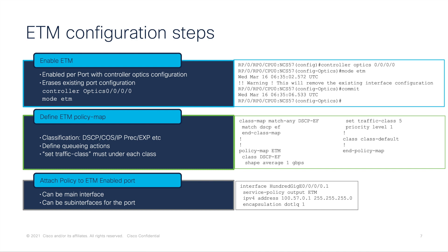The configuration steps for ETM involve three basic steps. First, I have to enable ETM on a per-port basis using the controller optics configuration. Note that when I do this configuration, my existing interface configurations are erased, so we need to keep that in mind. Second, we define the policy map that sticks to the rules for ETM — that means classification based on DSCP, IP precedence, MPLS EXP, etc. Traffic-class-based classification is also possible but requires a special hardware module command. Third, we need to make sure that a set traffic-class statement is present in each of the class maps within the policy map.